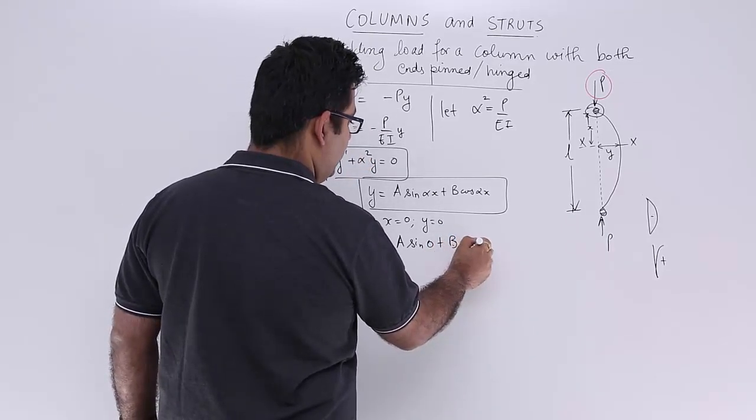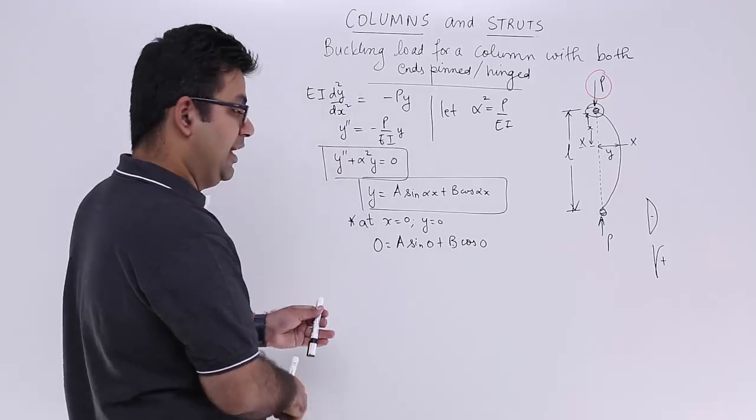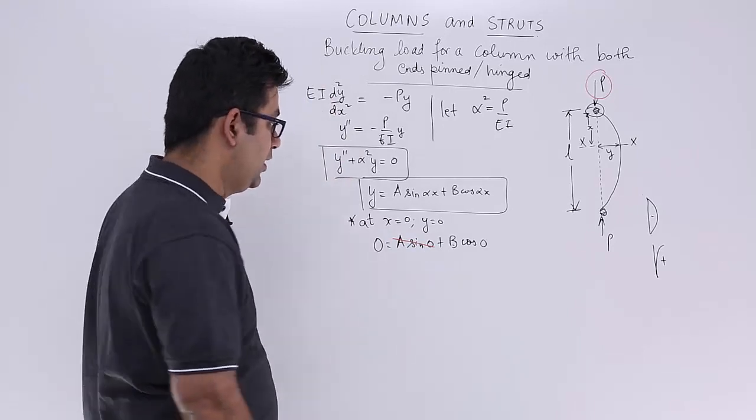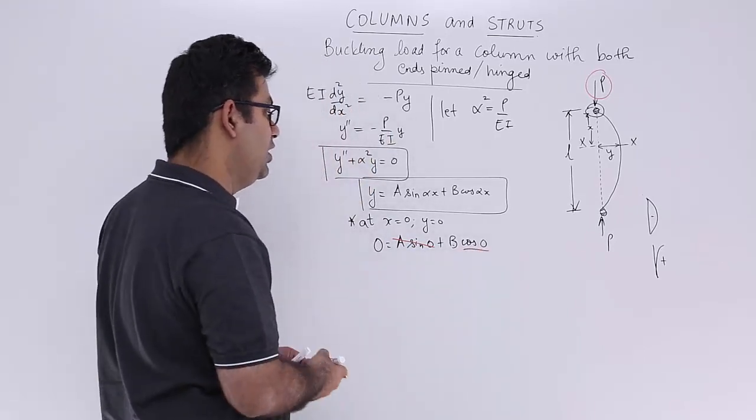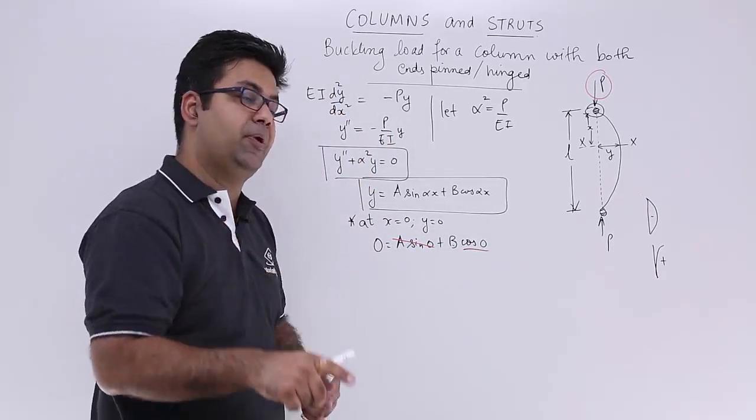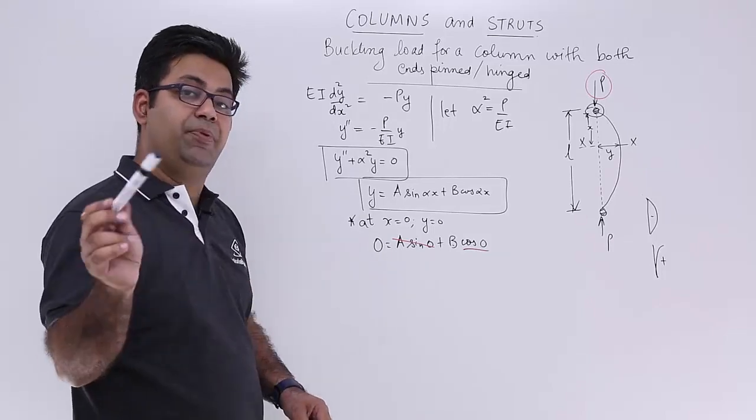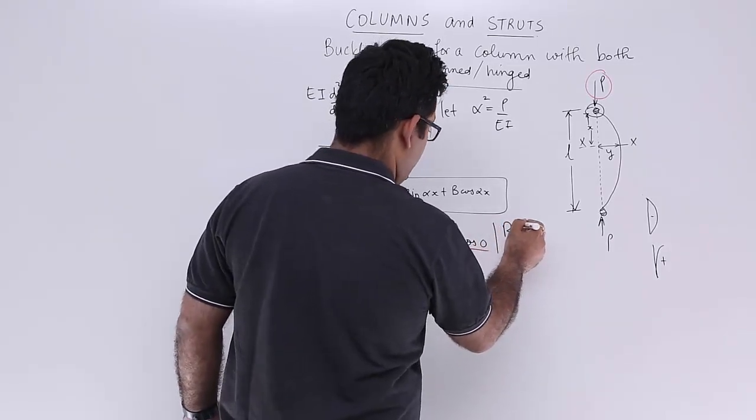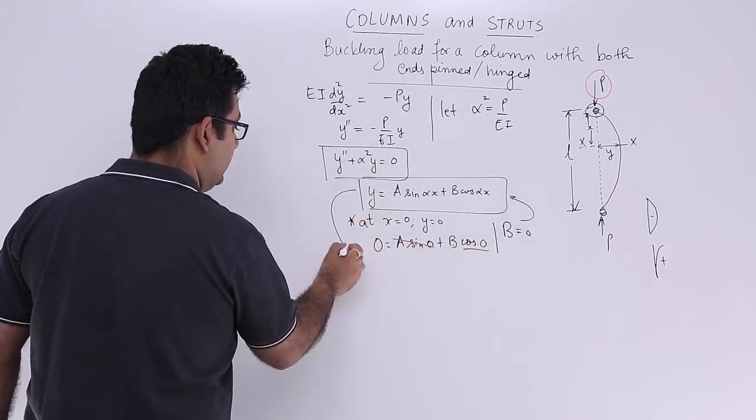Now sin 0 is 0, so this entire term will be gone. Cos 0 is 1, so it will stay. So the value of B now becomes 0. So you will have B is equal to 0. Let's put it in this equation and you will get the result as A into sin alpha x.